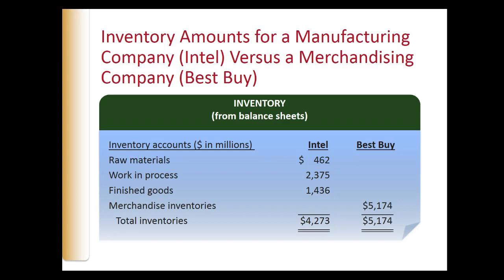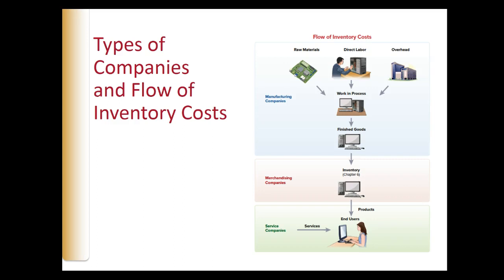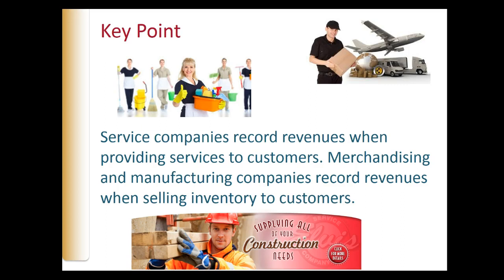These separate inventory accounts are added together and reported by Intel as total inventories. Other companies, such as Best Buy, don't manufacture computers but purchase finished computers from manufacturers to sell to consumers. This slide shows the different inventory accounts for Intel and Best Buy as reported in their balance sheets, and the flow of inventory costs for service, manufacturing, and merchandising companies. A key point: service companies record revenues when providing service to customers, while merchandising and manufacturing companies record revenues when selling inventory to customers.